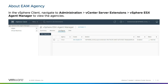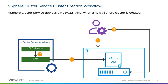vSphere Cluster Service deploys vCLS VMs when a new vSphere cluster is created. First, the vSphere administrator creates a vSphere cluster. The vSphere Cluster Service Manager creates an EAM agency associated with the cluster. The administrator adds an ESXi host to the cluster, and EAM deploys a vCLS VM to that host. Additional vCLS VMs are deployed as additional ESXi hosts are added to the cluster. A maximum of three vCLS VMs are deployed and maintained in a single vSphere cluster.